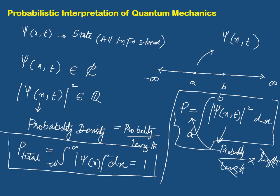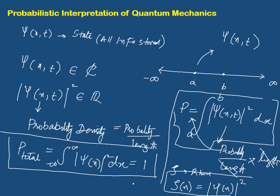One more thing I want to tell you before going to the numerical: in physics, density is normally represented by the Greek letter rho. Just as mass density and charge density are represented by rho, by convention the probability density can also be written as rho of x. So whenever you feel uncomfortable writing psi mod square, you can write rho of x instead, which is convenient to write.